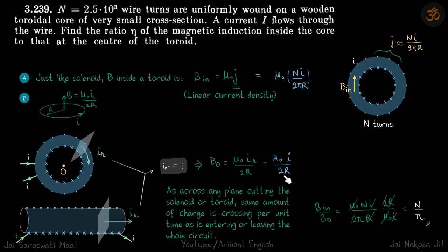So this is the field at the center and this is the field inside the toroid. So we are to find the ratio of these two, just divide these two and you will get your answer.